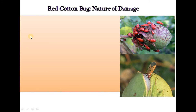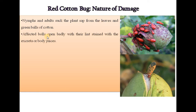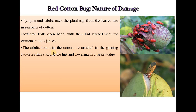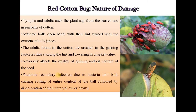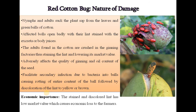Nymph and adult suck the plant sap from the leaves and green bolls of cotton. Affected bolls open badly with lint stained with excreta or body juices. Adults found in cotton are crushed in ginning factories, staining the lint and lowering its market value. It adversely affects the quality of ginning and oil content of seed, and facilitates secondary bacterial infection into bolls causing rotting and discoloration of lint to yellow or brown. Thus, the stained and discolored lint has low market value, causing economic loss to the farmers.